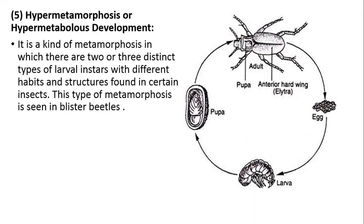The fifth type is hypermetamorphosis or hypermetabolous development, a kind of metamorphosis in which there are two or three distinct types of larval instars with different habitats and structures. This type is seen in the blister beetle, where adults produce eggs that convert into multiple distinct larval forms.